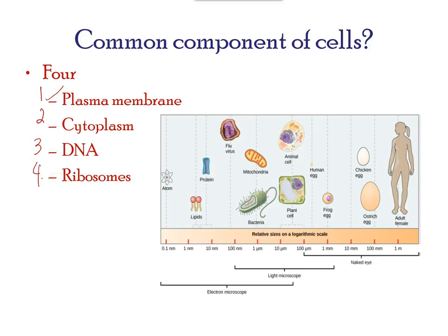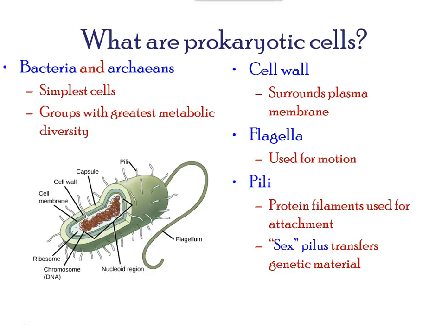Prokaryotes differ from eukaryote cells in several ways. The small cell size of prokaryotes allows ions and organic molecules that enter them to quickly spread to other parts of the cell. Similarly, any waste products produced within a prokaryotic cell quickly move out. However, larger eukaryotic cells have evolved different structural adaptations to enhance cellular transport.